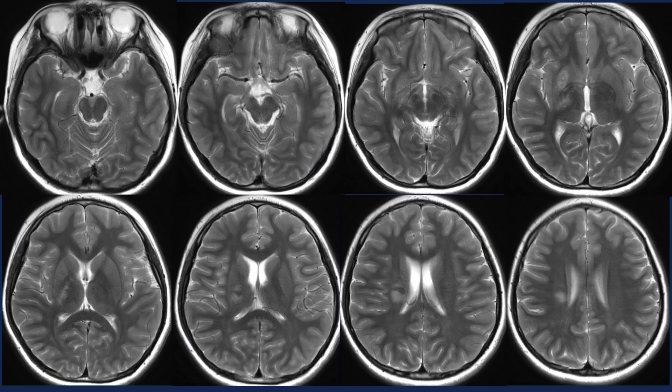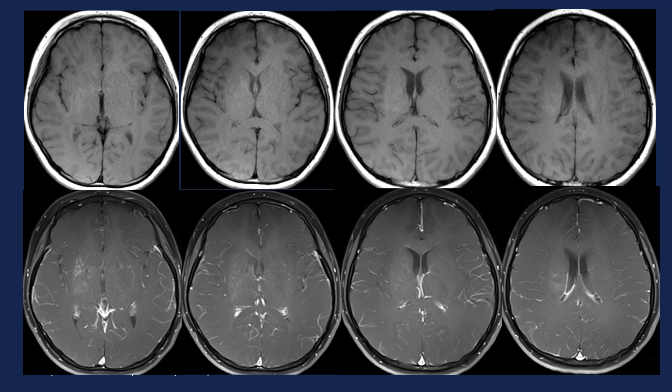An MRI was performed and these are the T2-weighted images taken across the area of interest. There is an ill-defined T2 hyper-intense lesion in the right lentiform nucleus and the thalamus, extending across the posterior limb of the internal capsule and superiorly into the corona radiata. There is no mass effect. Note also that there is reduction in volume of the right cerebral peduncle and slight hyper-intensity suggestive of Wallerian degeneration. On T1-weighted images the lesion is not evident, and on post-contrast scans there is mild enhancement of the lesion in the lentiform nucleus and thalamus.